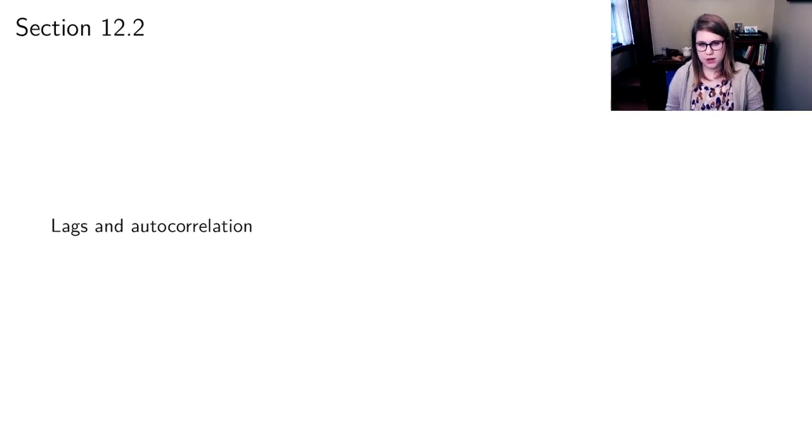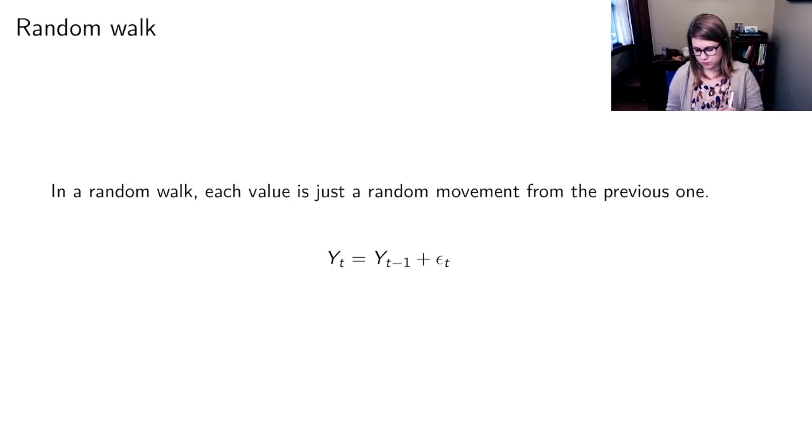Now in section 2.2 we're going to talk about lags and autocorrelation. So first let's define a random walk. A random walk is something where each value in a time series is just a random movement from the previous one.